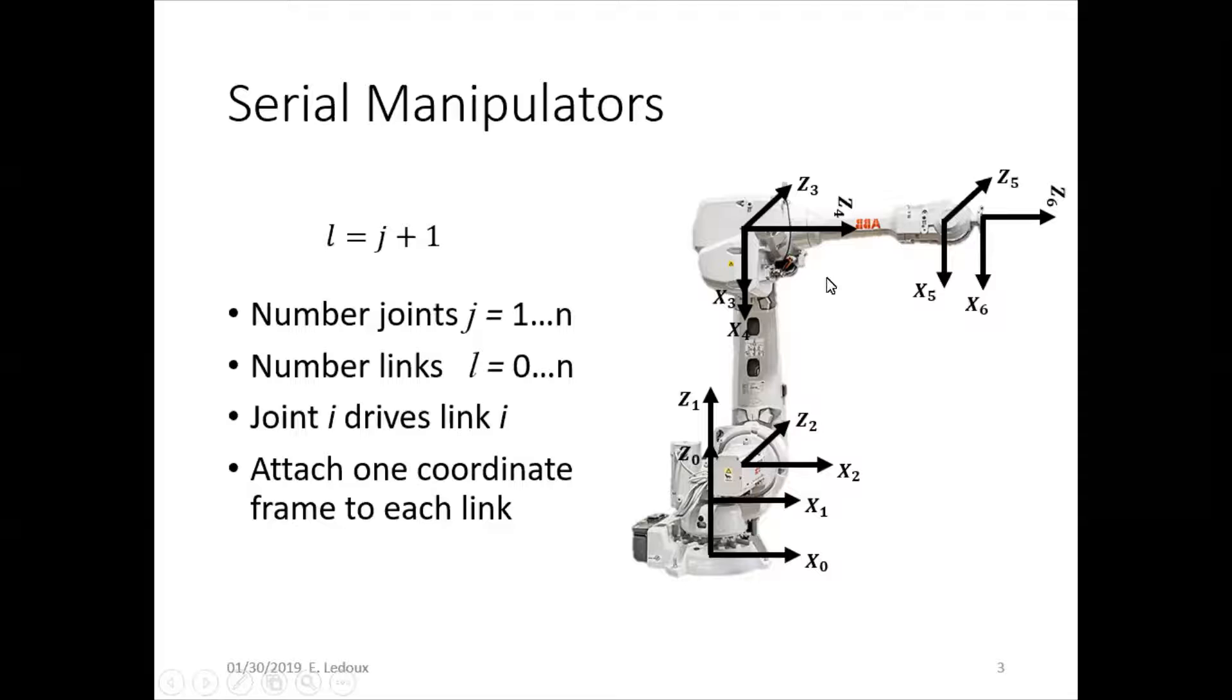Joint five moves the same way that joints two and three do, just for this end. And then joint six spins the wrist. Usually the z-axis goes along the joint and the x-axis and y-axis are perpendicular to it.